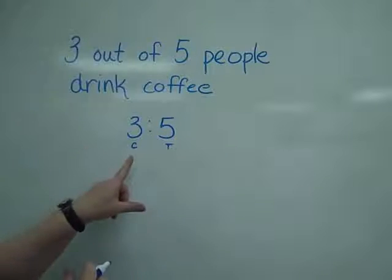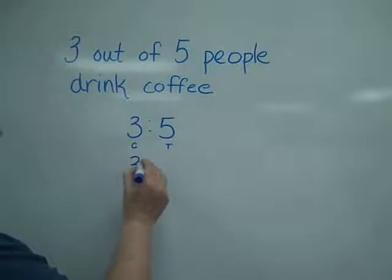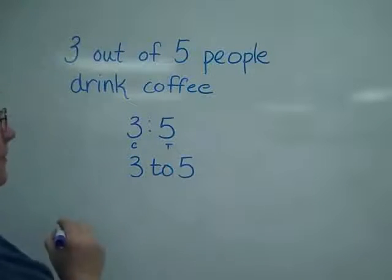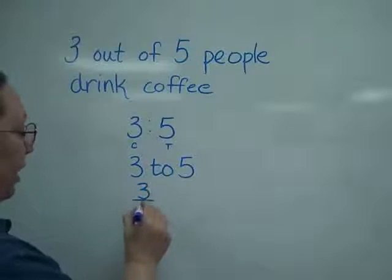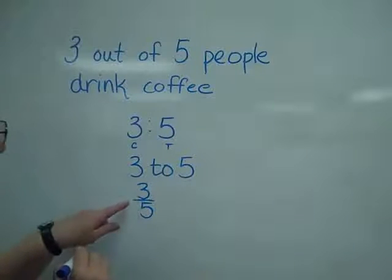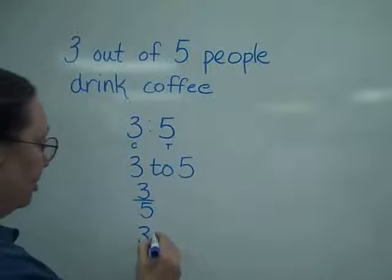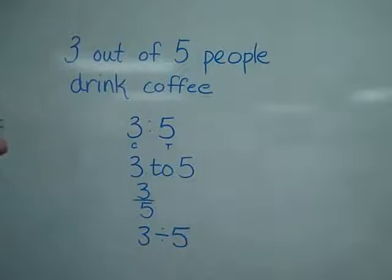Okay, let's look at another way of writing that same thing. I could have also written 3 to 5, or I could put it into a fraction form of 3 fifths. And because I know that that fraction bar is a division, I could have also written it 3 divided by 5. All of these are acceptable ways of writing a ratio.